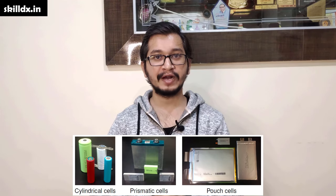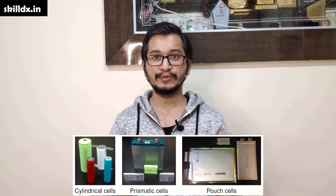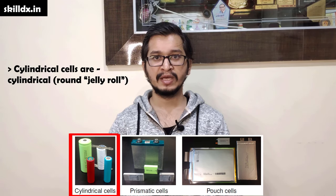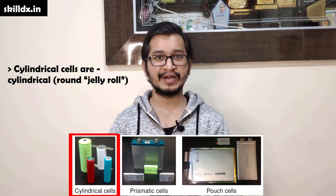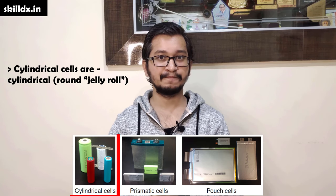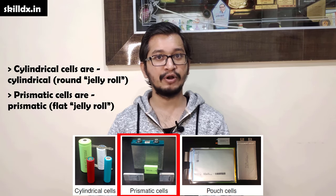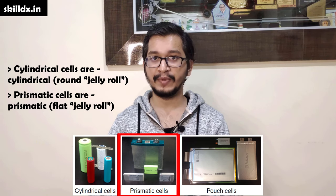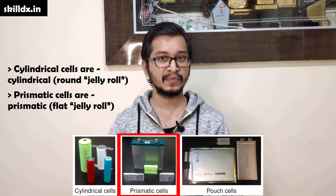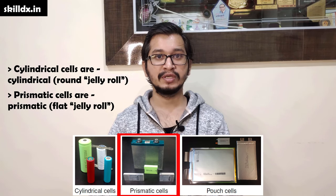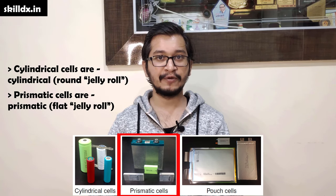There are three basic form factors that are used for lithium-ion battery cells. The photograph shows several examples of cylindrical format cells. They are named as cylindrical cells because they are packaged inside a cylinder. Besides cylindrical cells, there are several examples of what are known as prismatic format lithium-ion battery cells. These cells have that name because they are packaged in metal rectangular prisms.